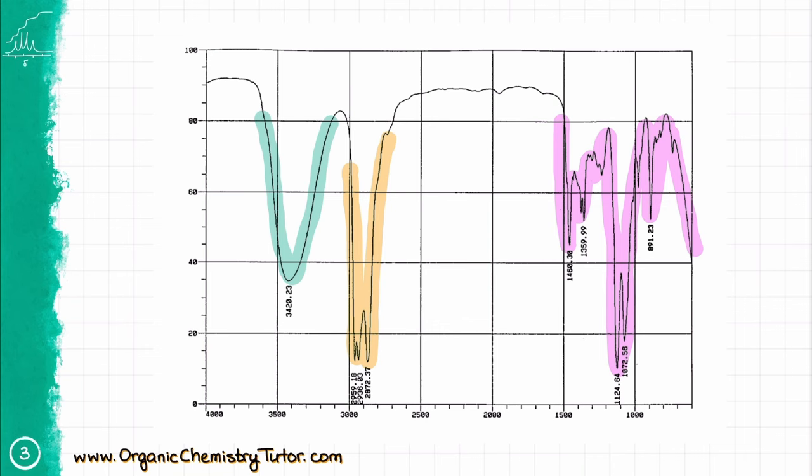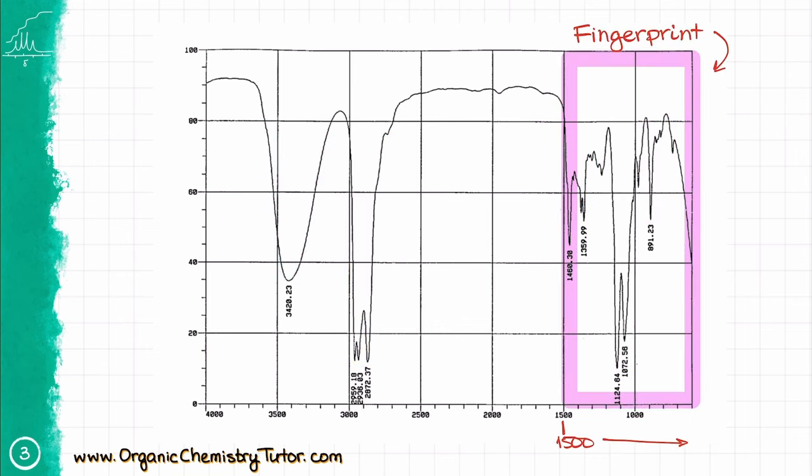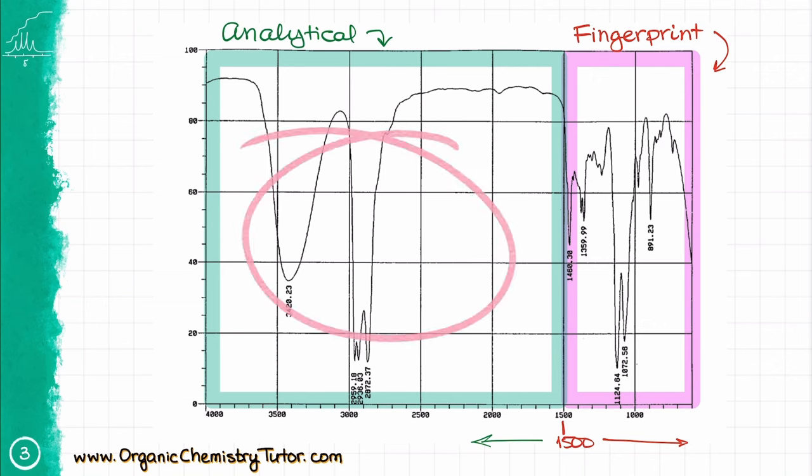When it comes to the IR spectrum, we have two regions. We have a fingerprint region, which is below 1500 reciprocal centimeters, and we have the analytical region above 1500 reciprocal centimeters. Anything we care about is going to be in the analytical region, right over here.